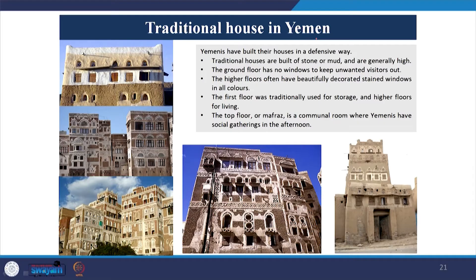Another very beautiful example is the traditional houses of Yemen. The material used is largely mud or stone — stone is very commonly available, however wood is not. Unlike what we saw in Turkey in the Sirenz village houses where stone and wood were used, these houses are made entirely out of stone and mud. The unique architectural identity and vocabulary imparted to these buildings comes from the ornamentation and also the arches of the windows.